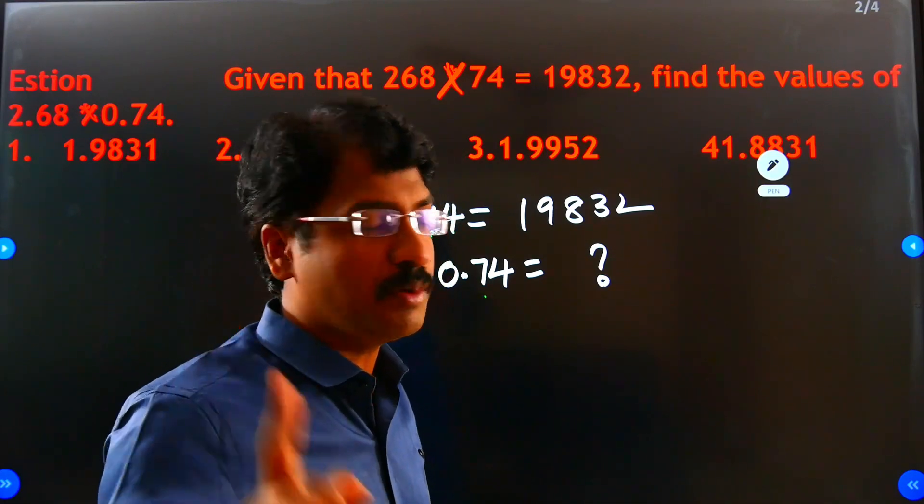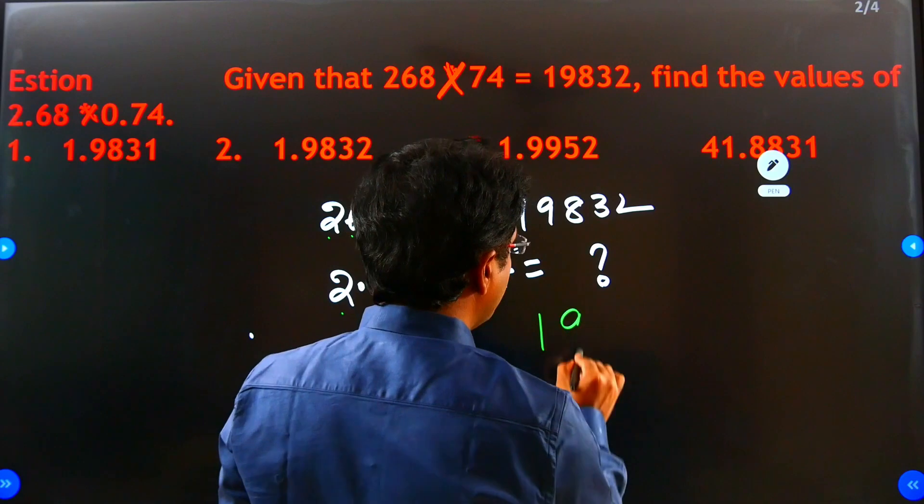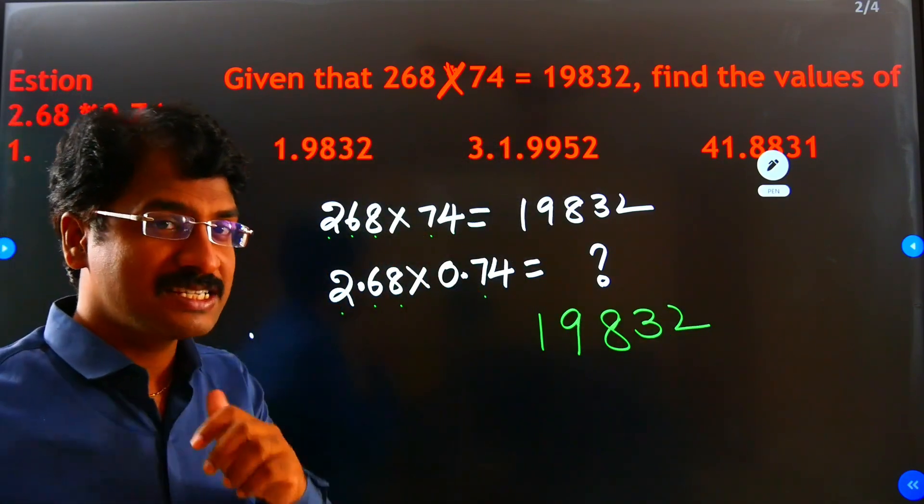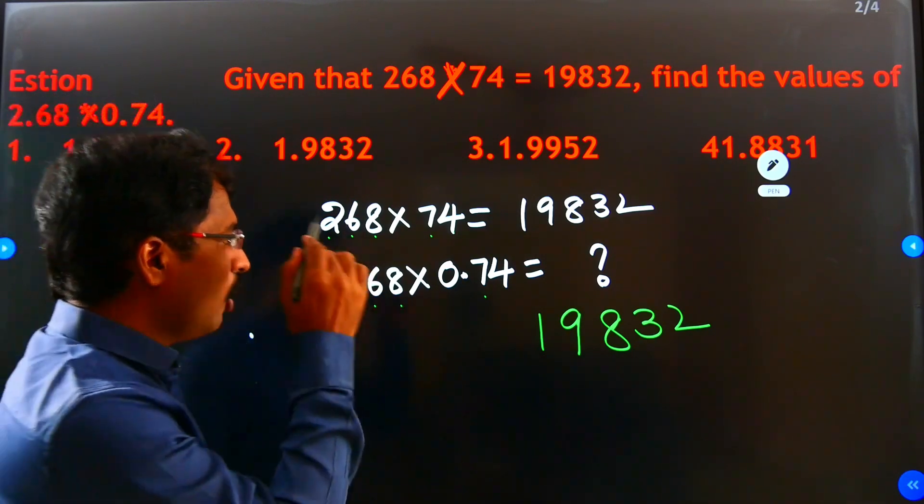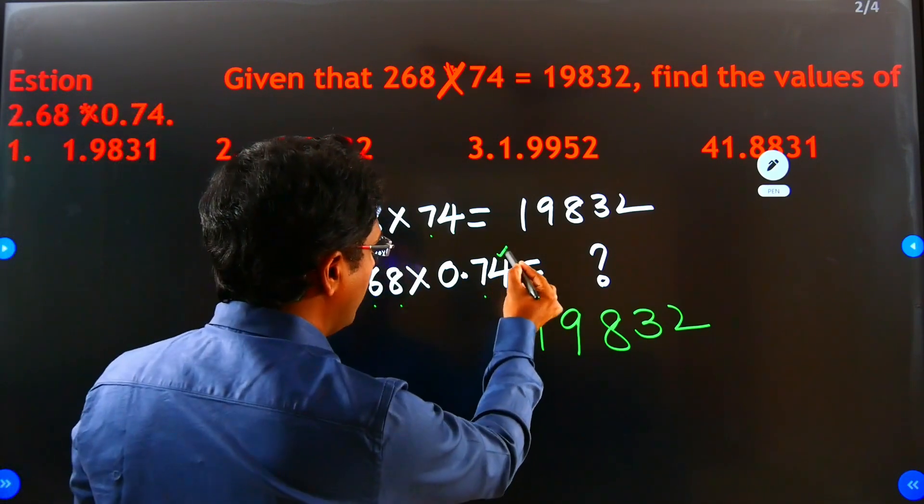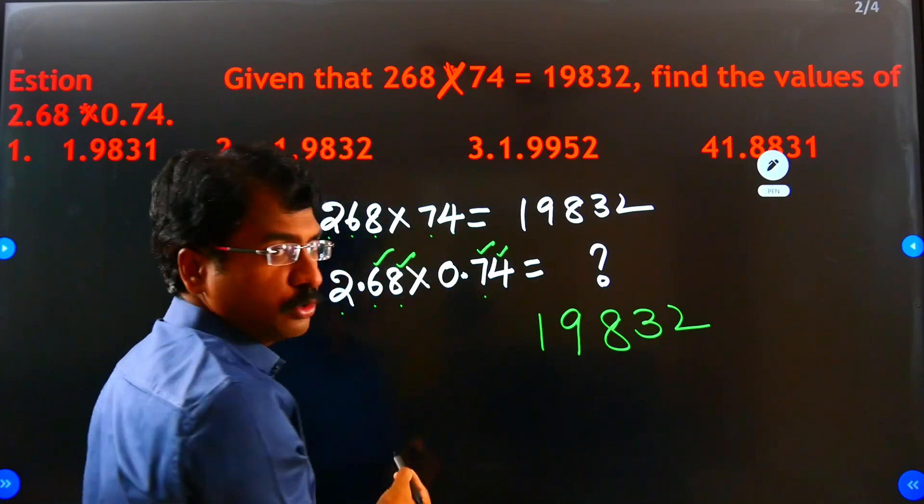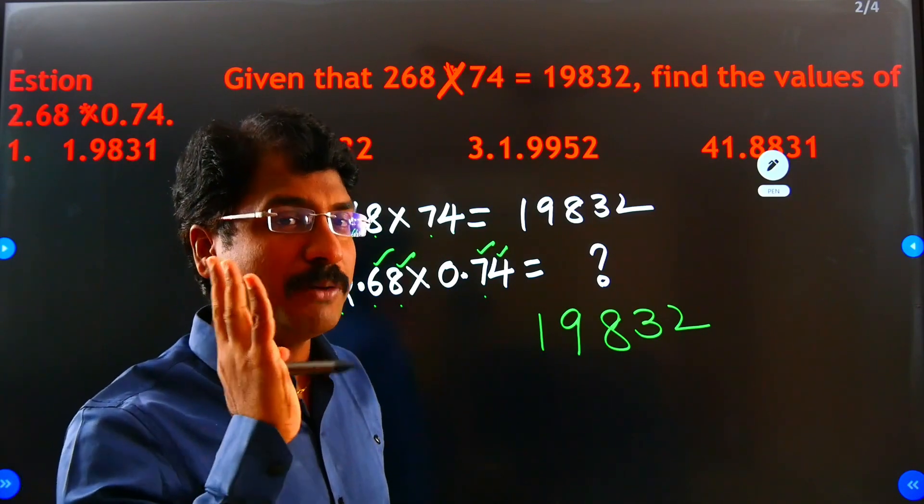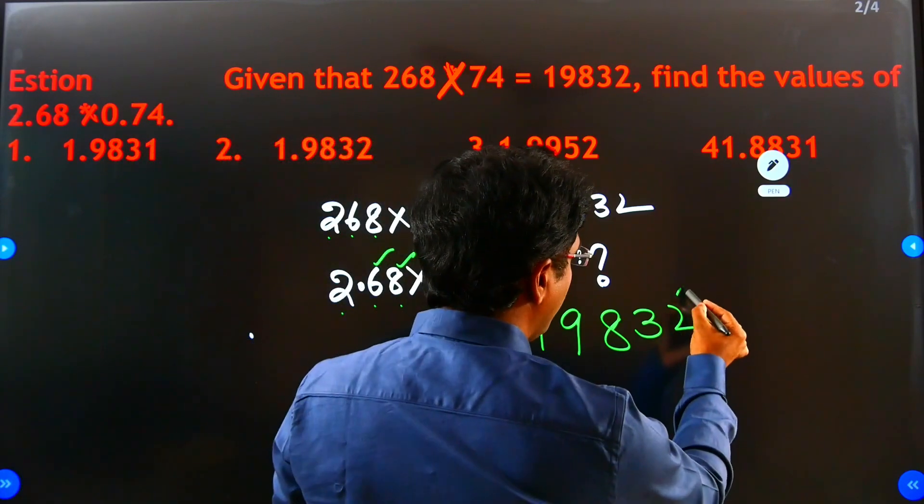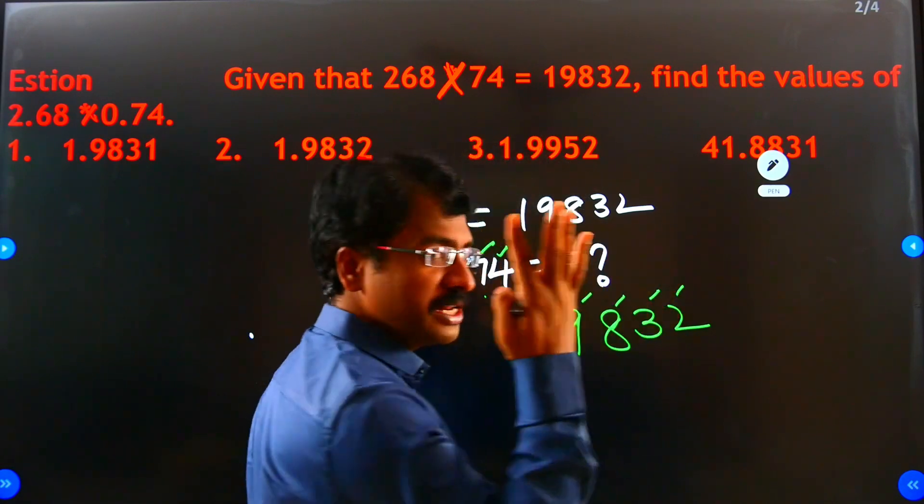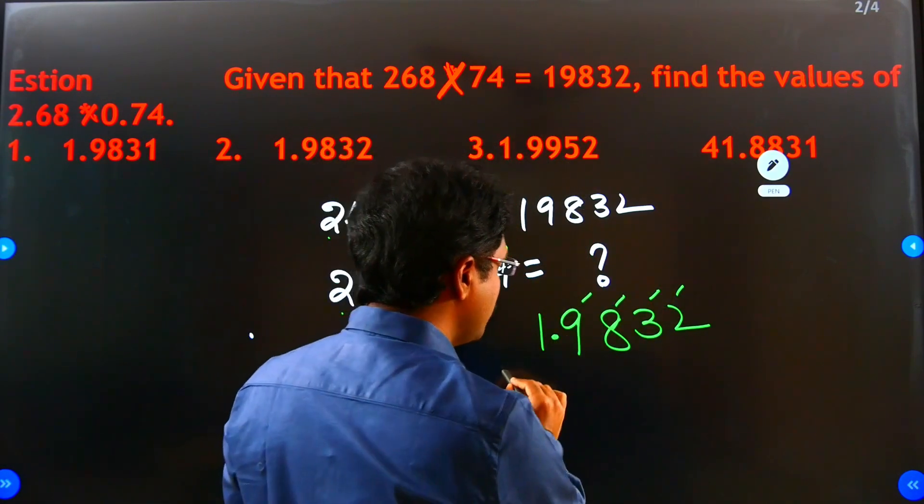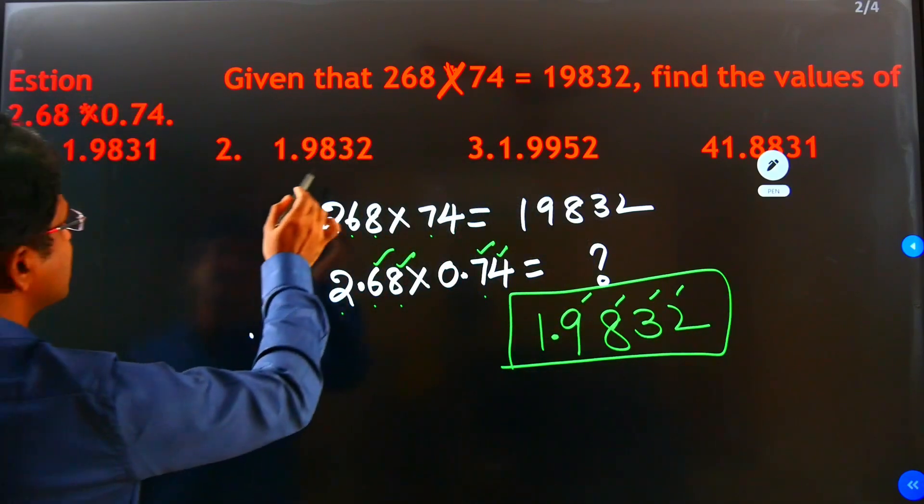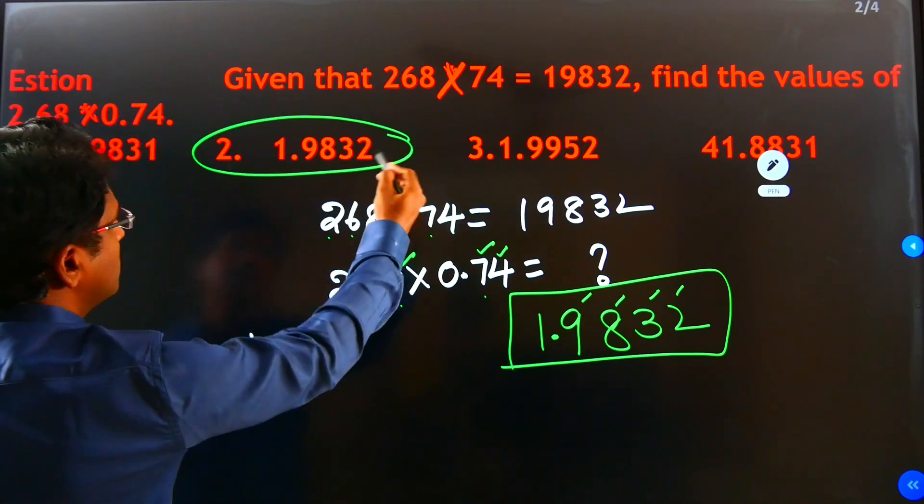So first of all, forget about the decimal place, so same answer must be 19832. Now let's finish our answer. How many decimals are there? 1, 2, 3, 4 decimals. After two places here, decimal after two places, 2 plus 2, there are four decimal places. Count from the right side: 1, 2, 3, 4 decimal places, keep here decimal. That means 1.9832. Where is that? Yes, here 1.9832. Option 2 is the correct answer.